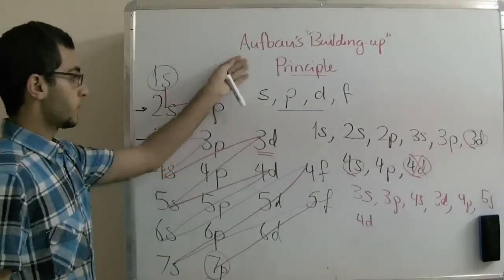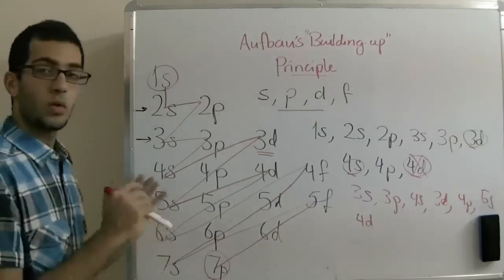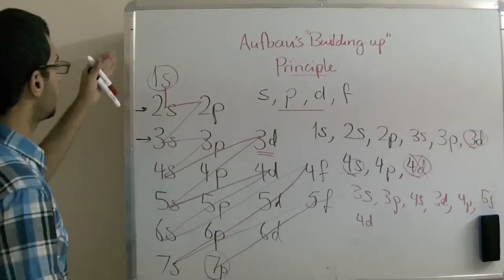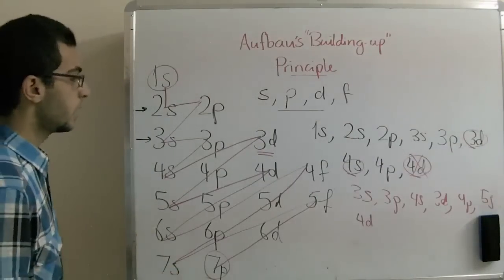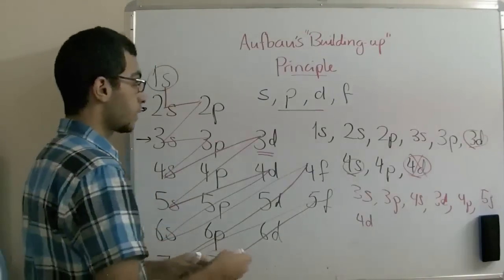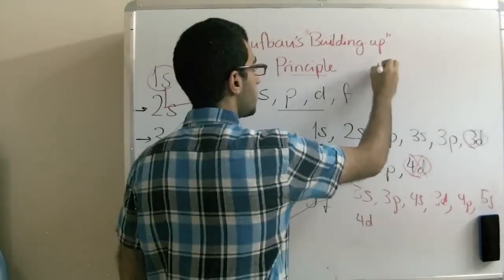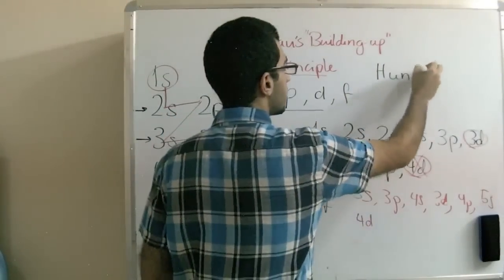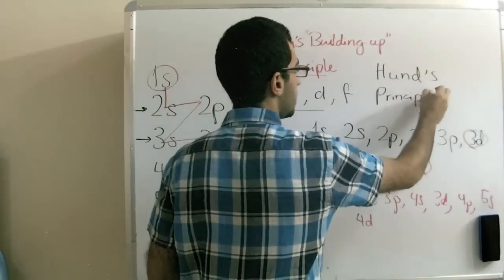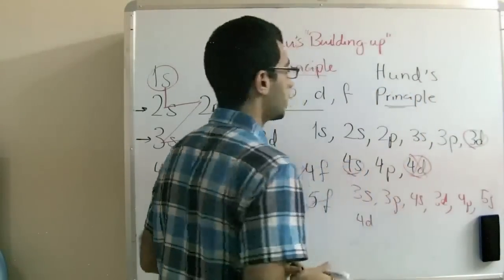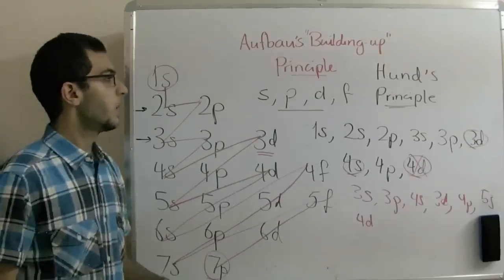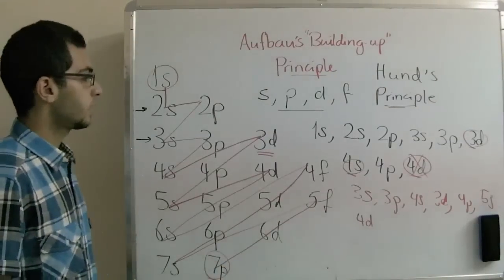That was Aufbau's Principle, and that was the order of the energy sublevels according to their energy, from least to most. The next time, we will talk about a principle which is called Hund's Principle, which also talks about the way of the arrangement of electrons in the energy sublevels. Until the next time, I thank you for watching.